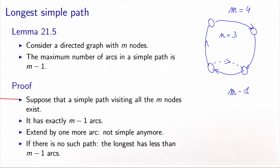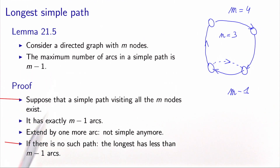Therefore, the first case is clear. If a simple path visiting all the nodes exists, it has exactly m-1 arcs. The second case is: what if there is no such path? In this case, the longest possible path has less than m-1 arcs, because it's not visiting all the nodes. And therefore m-1 is an upper bound on the number of arcs in a simple path in a directed graph.